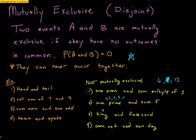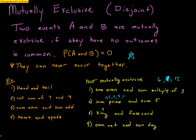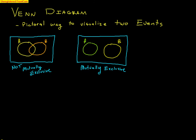Another way to understand mutually exclusive is with a Venn diagram. A Venn diagram is a pictorial way to visualize two events. The example on the left has circles for events A and B with overlap in the middle — the overlap is where A and B occur at the same time, so that's not mutually exclusive. Mutually exclusive is shown on the right where two events are not connected — no overlap whatsoever. This is why they're also called disjoint: the circles are not joined together.